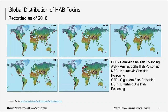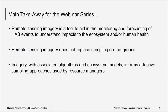The worldwide distribution of HAB toxins is wide-ranging and has increased over time. Nearly all coastal regions have been afflicted with toxic HABs, often by more than one toxin or species, over large geographic ranges. These maps of HAB toxin incidents from 2016 demonstrate this wide geographic range and presence of multiple toxins in some locations. It is important to note that remote sensing imagery is a tool to aid in monitoring and forecasting of HAB events — it does not replace ground sampling. Imagery with associated algorithms and ecosystem models informs adaptive sampling approaches used by resource managers.